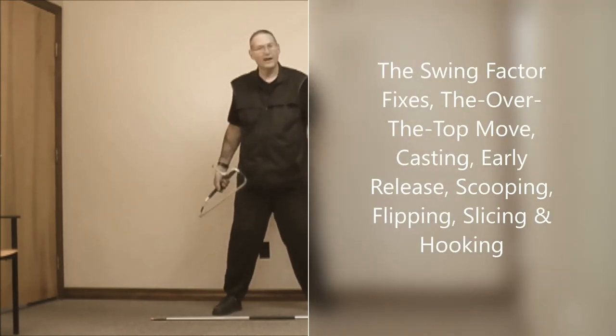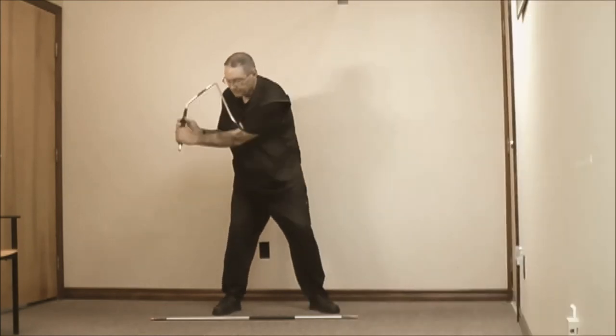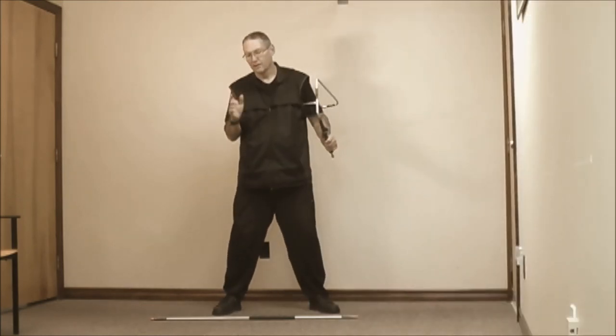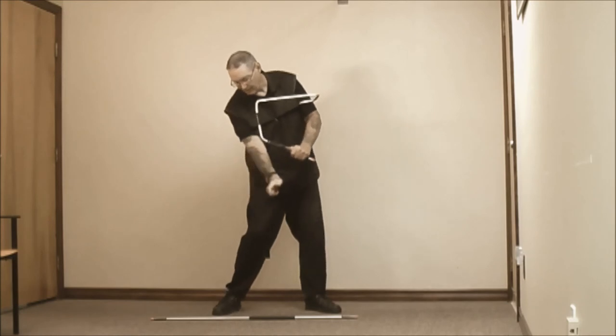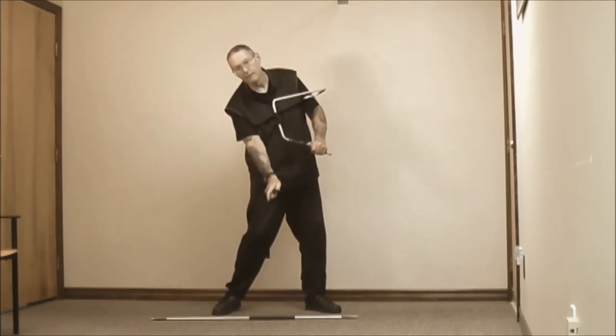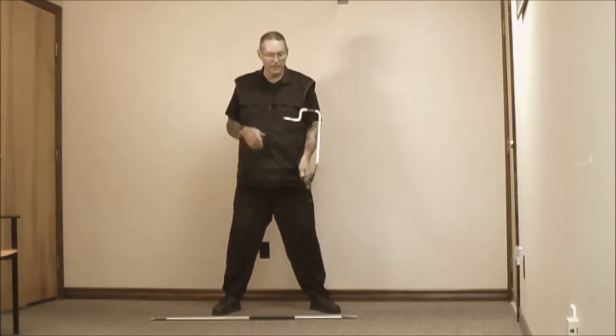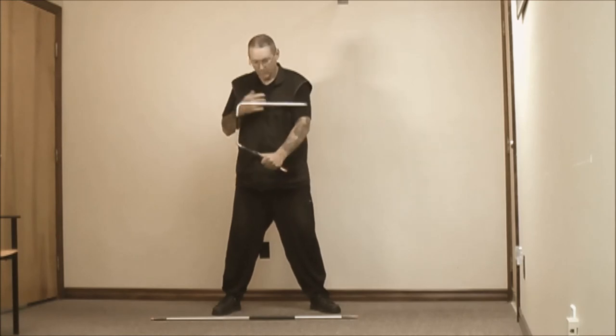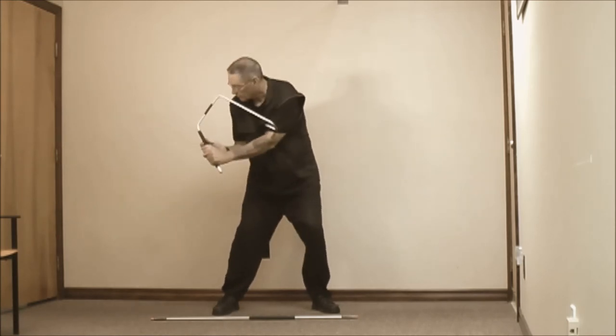That's an early release, cast, whatever you want to call it, it doesn't work. What we're trying to do with the swing factor here is we're going to slowly straighten our right arm out at impact. And as we do this, this orange cap will never cross over the center of our chest.